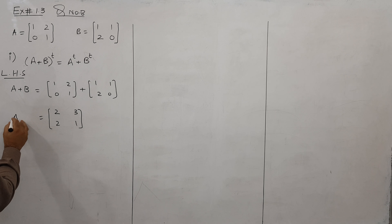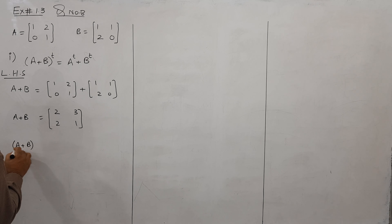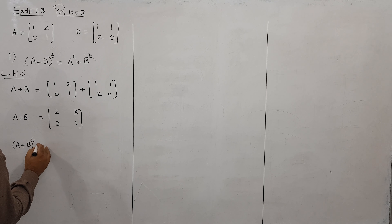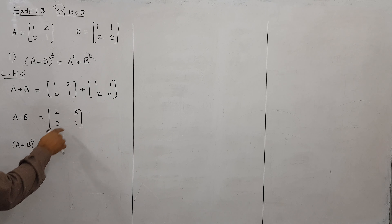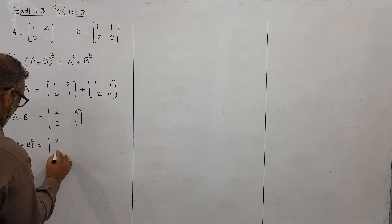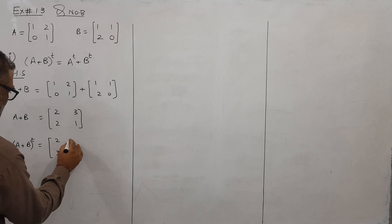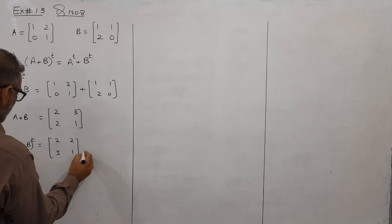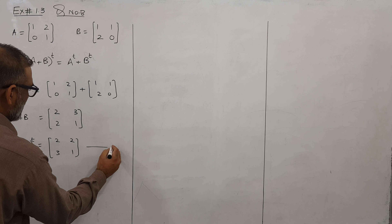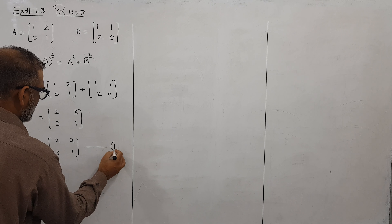اس کے بعد ہمیں اس کا transpose لینا ہے۔ تو یہ (A+B)^T ہمارا find out ہو گیا۔ Transpose آپ کو پتہ ہے کہ پہلی جو row ہے وہ پہلا column بن جائے گا، دوسری row جو ہے وہ دوسرا column بن جائے گا۔ اس کو ہم equation number 1 کا نام دیتے ہیں۔